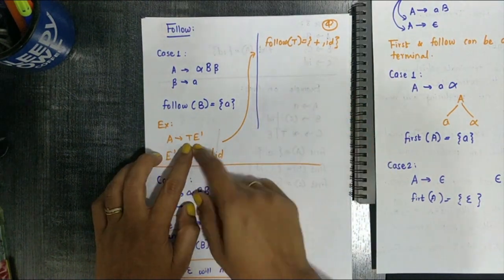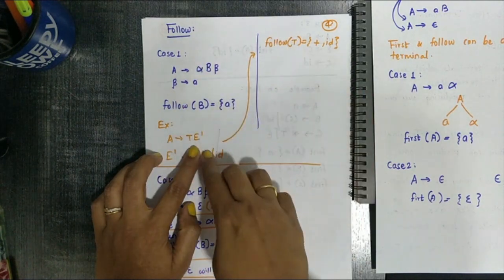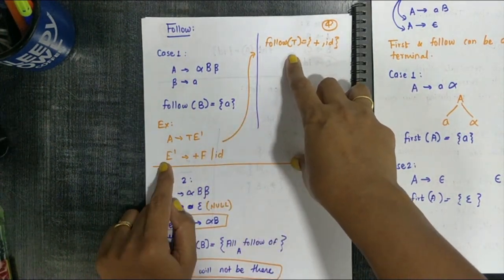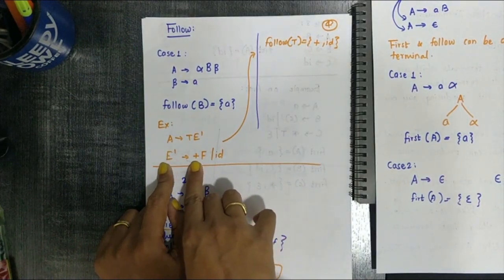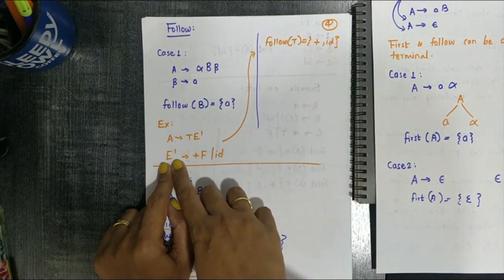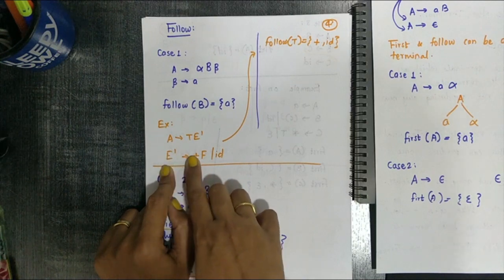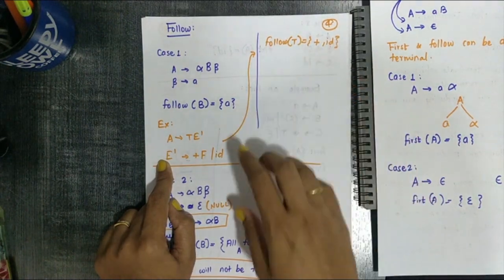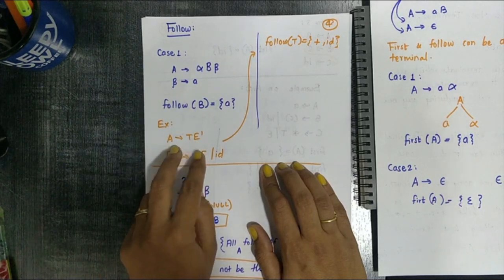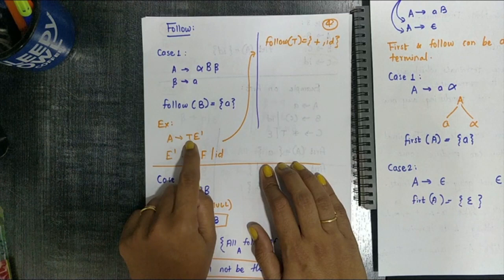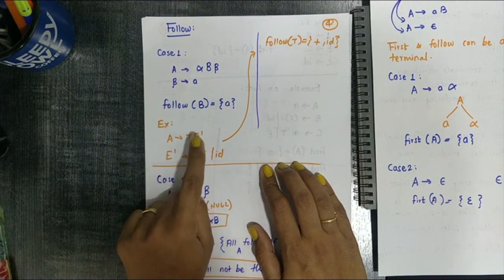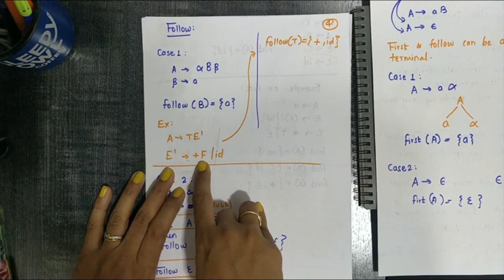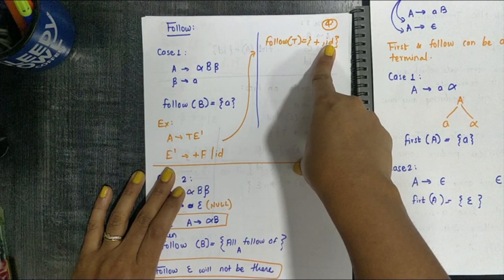For example, E tends to T·E', and E' tends to +F | id. If we want to find Follow(T): the next symbol after T is E'. So we find First(E'). E' tends to +F and id, so plus and id are both in First(E'). Therefore, Follow(T) = {+, id}. The first of the symbol following T becomes the follow of T.